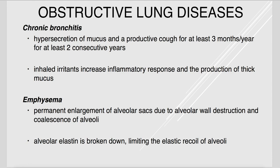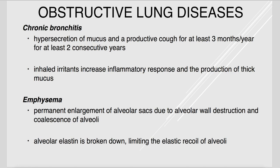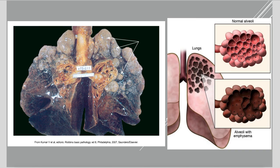In emphysema, the alveoli are arranged to maximize surface area for gas exchange. The problem is the walls between alveoli start to break down, and they coalesce into one stiff super-alveolus, dramatically limiting surface area for gas exchange. Additionally, emphysema involves breakdown of elastin surrounding the alveoli, which normally helps them recoil. Losing elastin makes the alveolar sacs stiff and very inefficient.